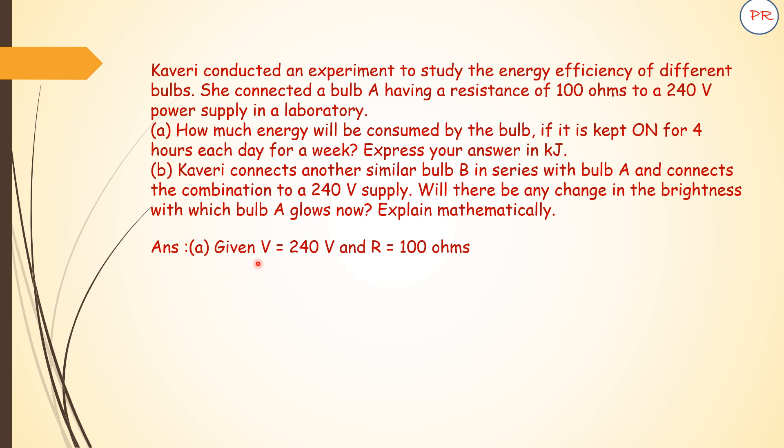Given voltage is 240 volts and resistance is 100 ohms. We need to calculate power consumed first. So power consumed is equal to V² divided by R. That is 240 squared divided by 100, which is 24 multiplied by 24. That comes out to be 576 watts. So this is the power consumed.